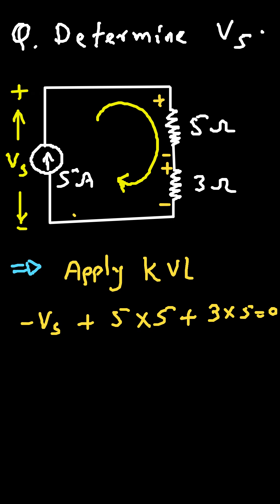Now let's simplify this, so it will be minus Vs, then plus, so 5 into 5 this will be 25, then plus this will be 15 is equal to 0.